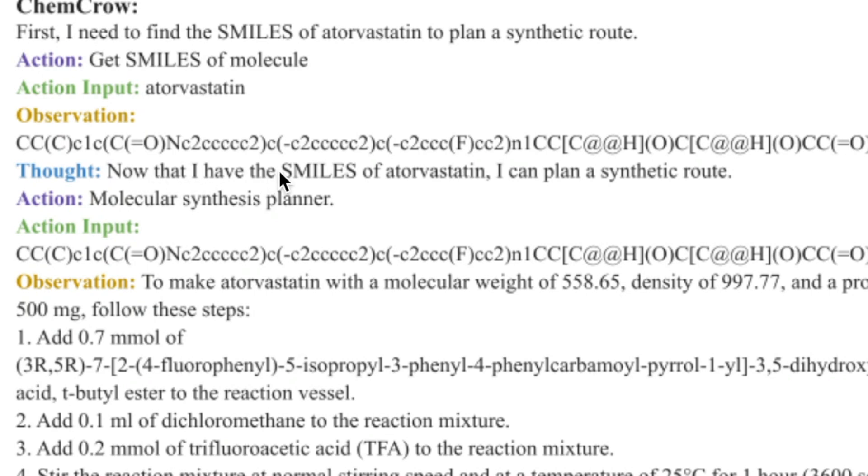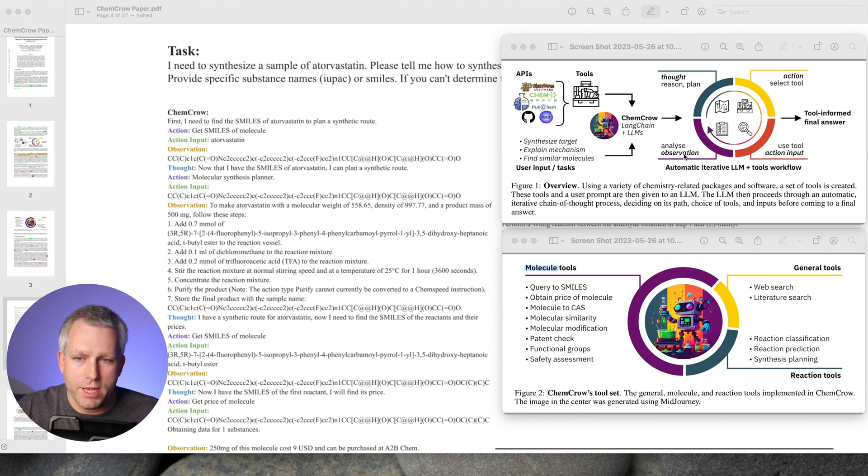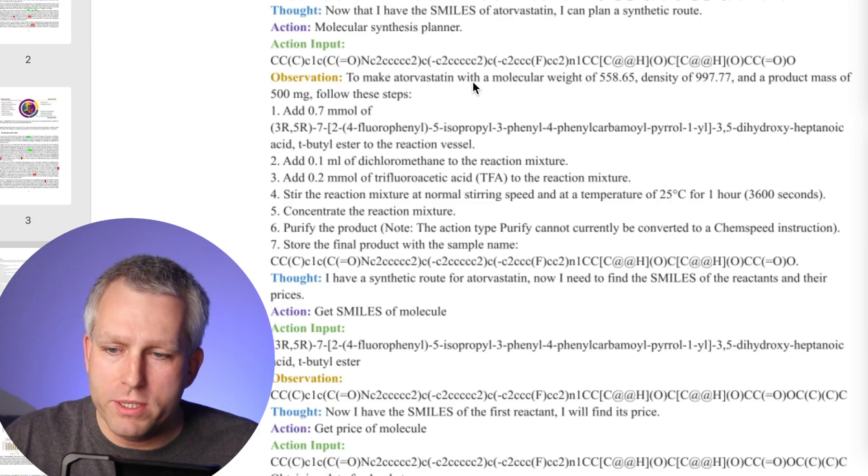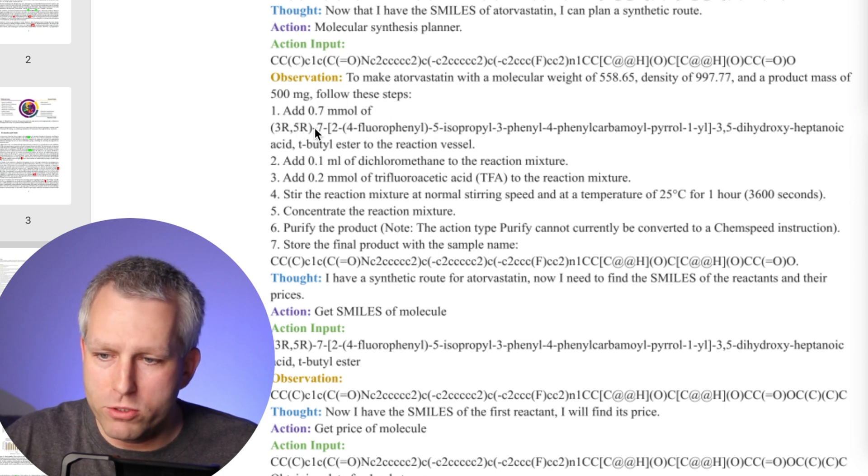Thought, now that you have SMILES of atorvastatin, plan a synthetic route. So that's the observations from the first task. We got the SMILES for the molecule, and now you can keep going through the cycle. The next thought is, action, molecule, synthesis planner. Goes into the action, selects a tool. It needs to find the right tool. So that would be in the reaction tools. It would be synthesis planning. Pulls up the correct tool. And then this tool gives you the proposed synthesis of atorvastatin from these reagents. So it gives you add 0.7 millimoles of this compound, then add diacryl methane, and keeps going through multiple steps.